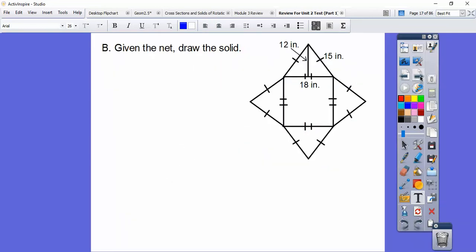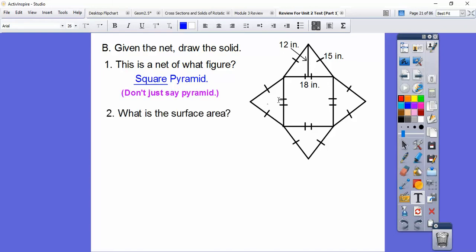Given this net figure, draw the solid. If we folded this up, it would give us a square pyramid right there. I thought I drew that, I guess I didn't. But anyways, can you draw a square pyramid going up? I thought I drew that, I'll do that in class. Don't say it's just a pyramid. It's a square pyramid because of all the markings right here.